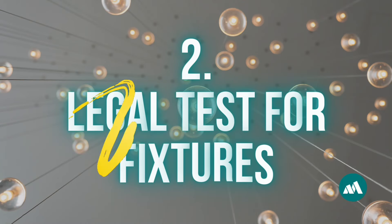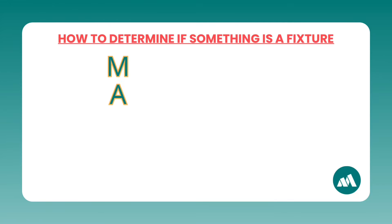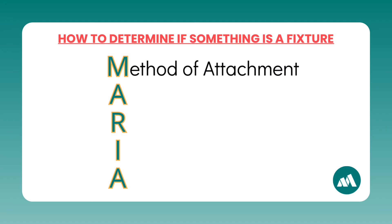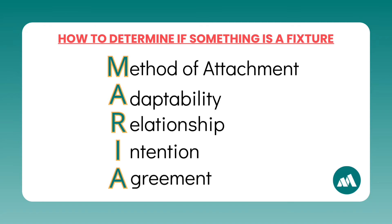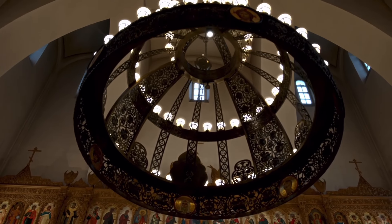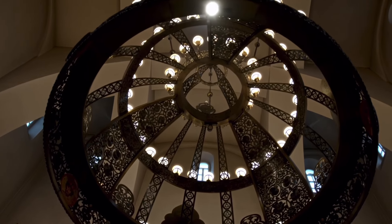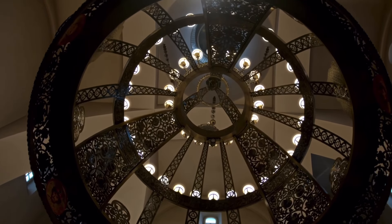Next we have the legal test for fixtures. When determining whether something is a fixture and therefore part of a property sale, the MARIA test is your best friend. MARIA stands for: Method of attachment, Adaptability of the item, Relationship of the parties, Intention of the person placing the item, and Agreement between the parties. For example, a chandelier screwed into the ceiling — method of attachment — and specifically chosen for the home — intention — would likely be considered a fixture.